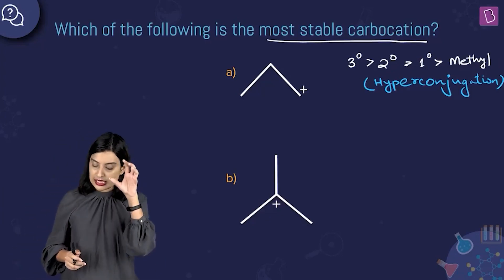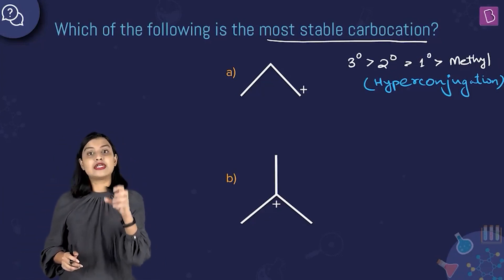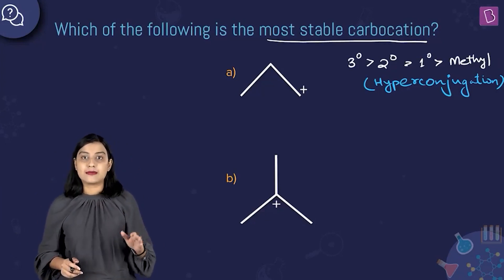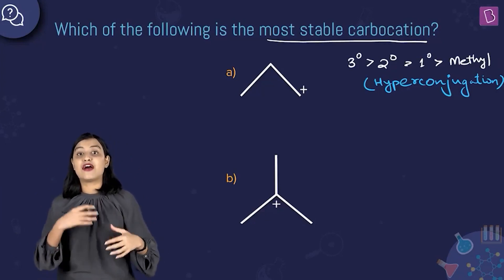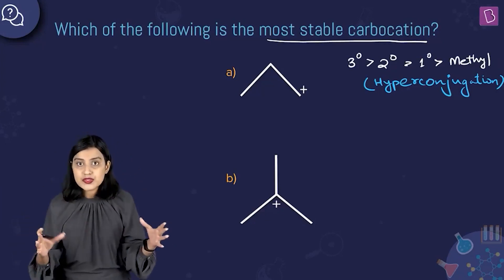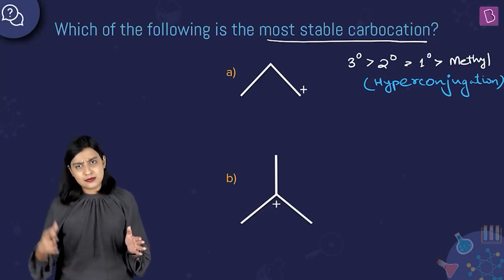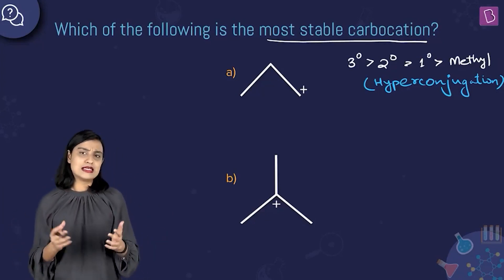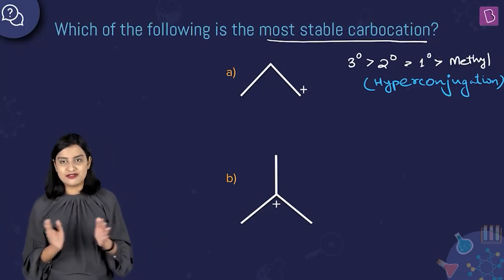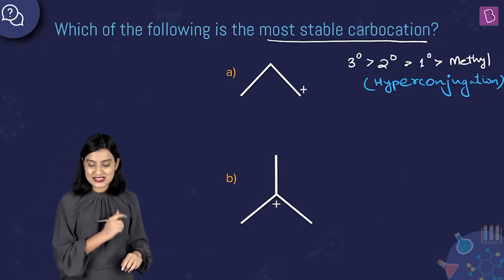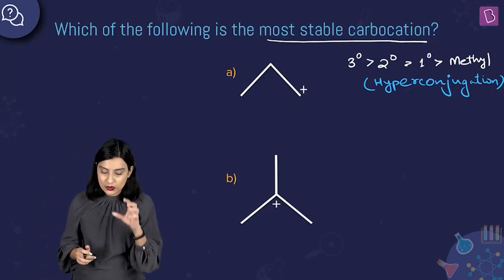In the case of a tertiary carbocation, the number of hyperconjugating structures becomes the most, then comes secondary, then primary, and then methyl has no such factor. So this is the governing principle.